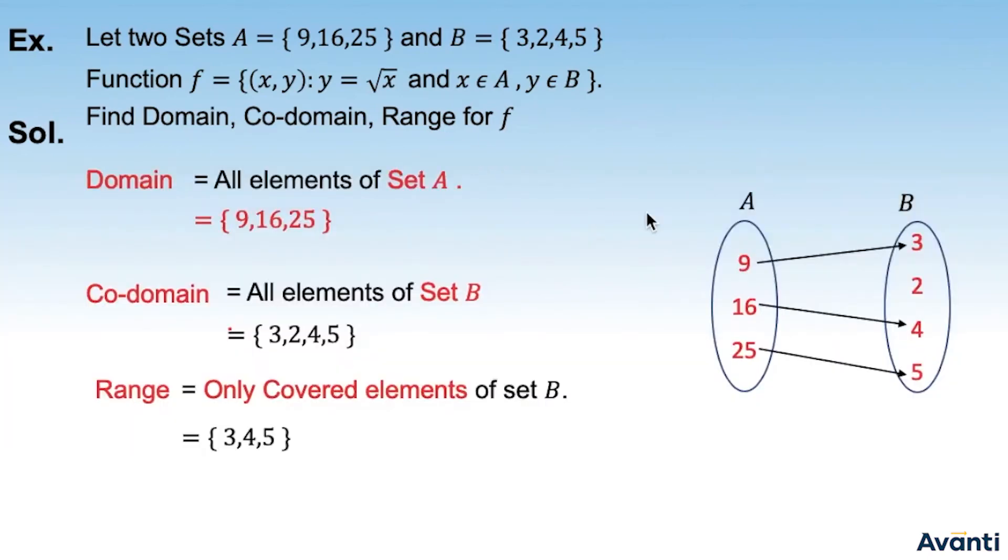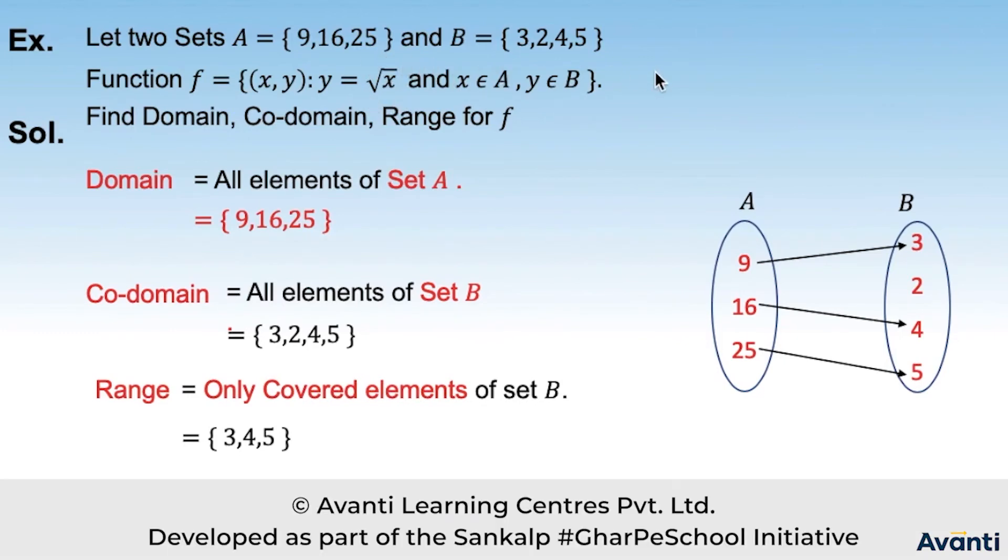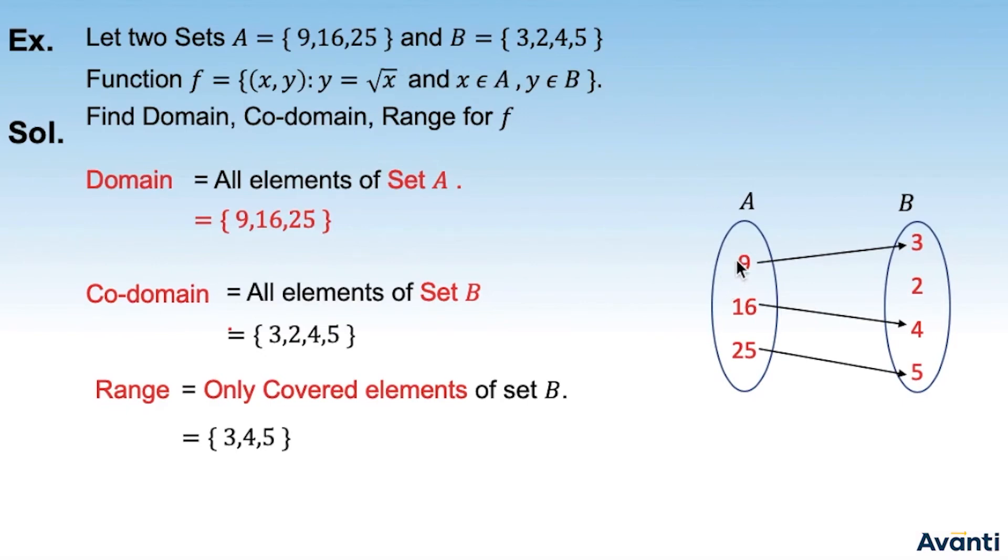Aayi ye dekhte hai. Yehaan pe y equal to root x hai. A quick fact about this function root x. Iska pura naam hoota hai positive square root. Kaafi logo ko doubt ae ga ki 9 ka square root to plus minus 3 ho sikta hai. Aisa nahi hai. Aagar x square equal to 9 lekha hai, tab x ke value plus minus 3 ho sakti hai. Par agar aapko root 9 dya gya hai, that by default means ki positive square root ki baat ho rai hai.